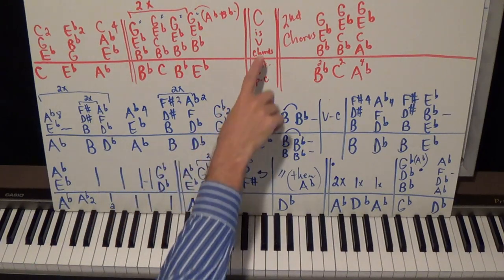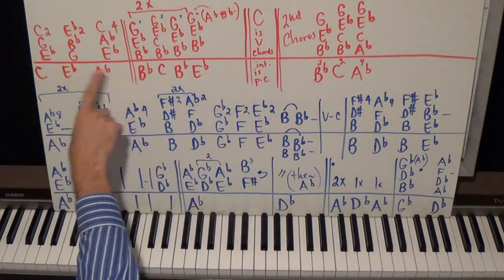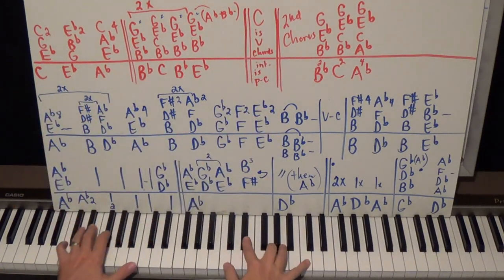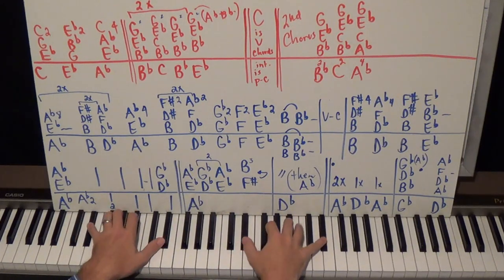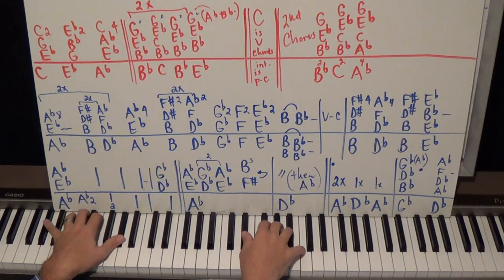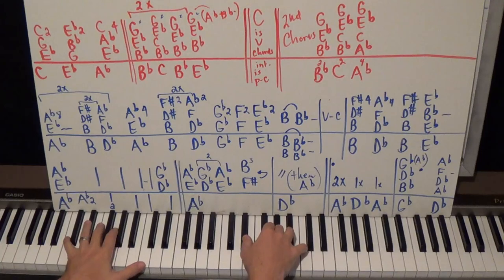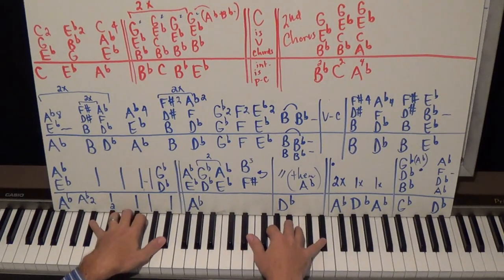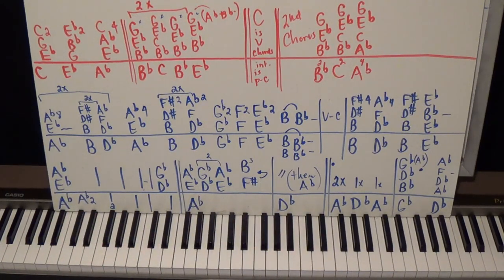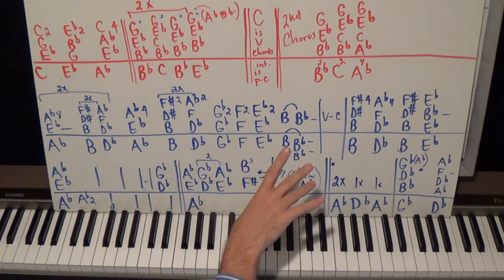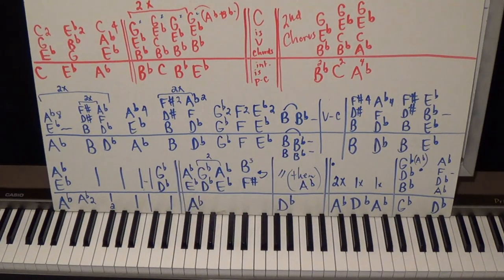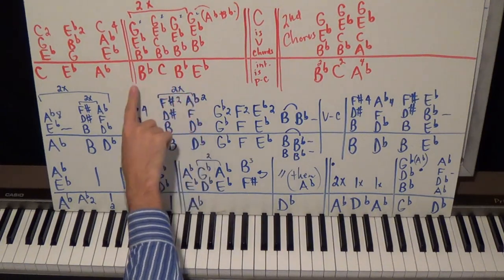All right, so that's the chorus part. The chorus is the verse chords, so you're just going to play the same pattern. Okay, the interlude before you start the next verse is the pre-chorus, this thing right here.